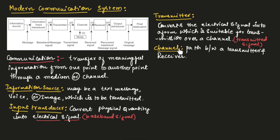In wireless communication, free space acts as the channel, and in wired communication, coaxial cables and optical cables act as the channel.